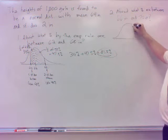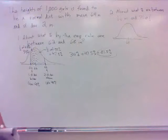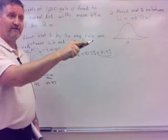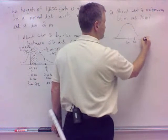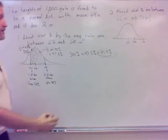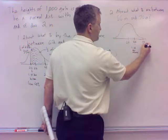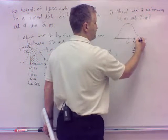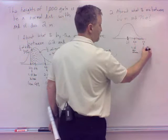Draw the picture — sixty-four is in the middle. What's different here is that both sixty-six and seventy are on the right side of sixty-four. Sixty-six is one standard deviation above the mean. To get to seventy, I go sixty-six, sixty-eight, seventy — that's three standard deviations above the mean, since each standard deviation equals two inches.